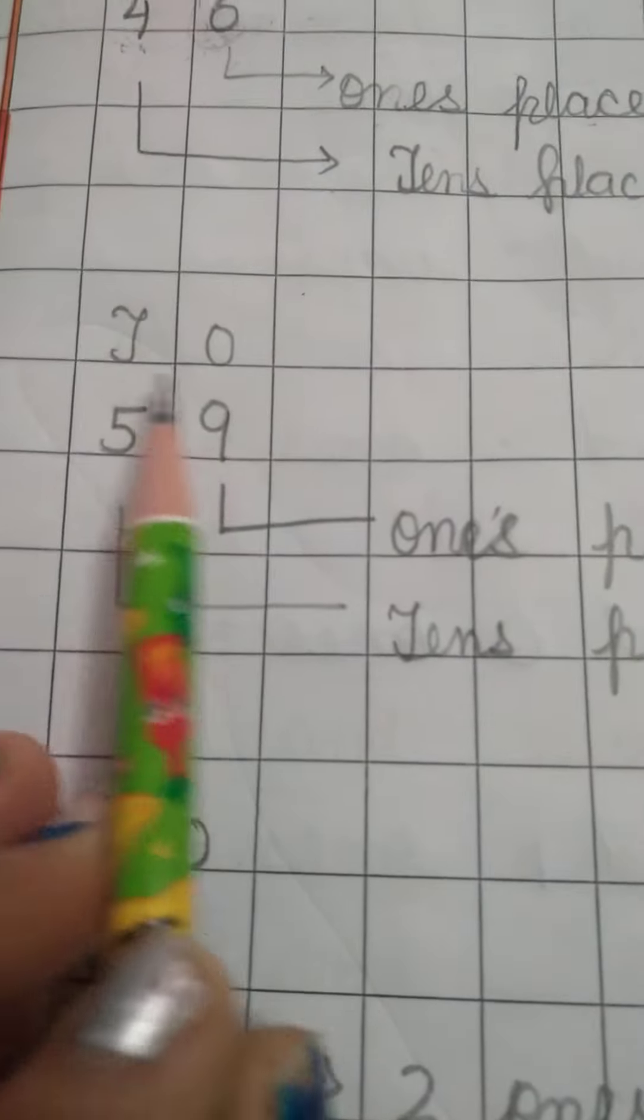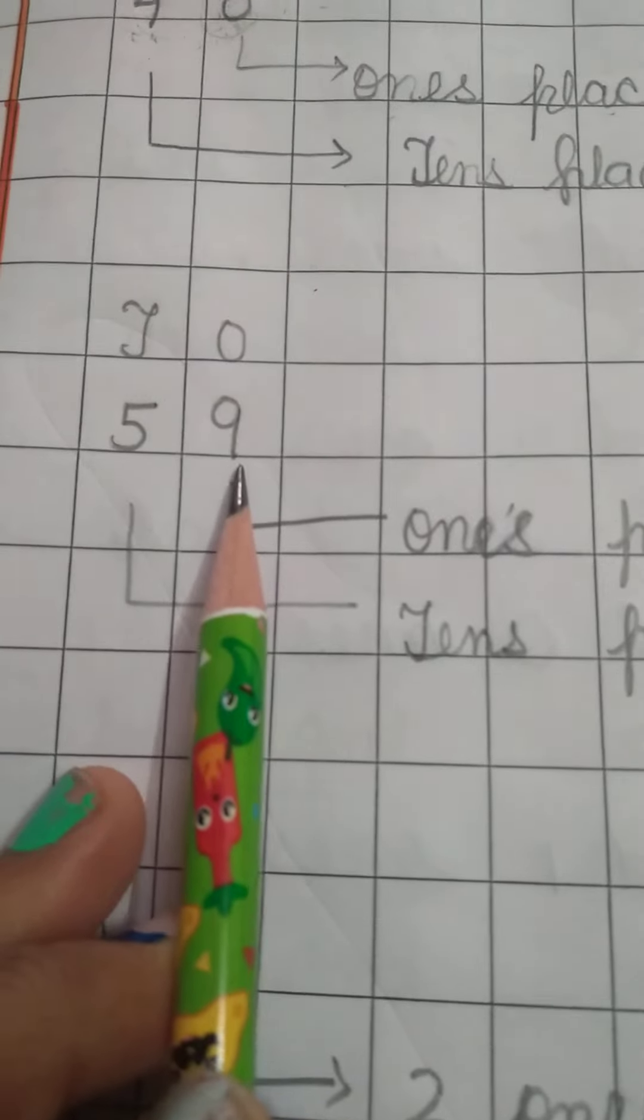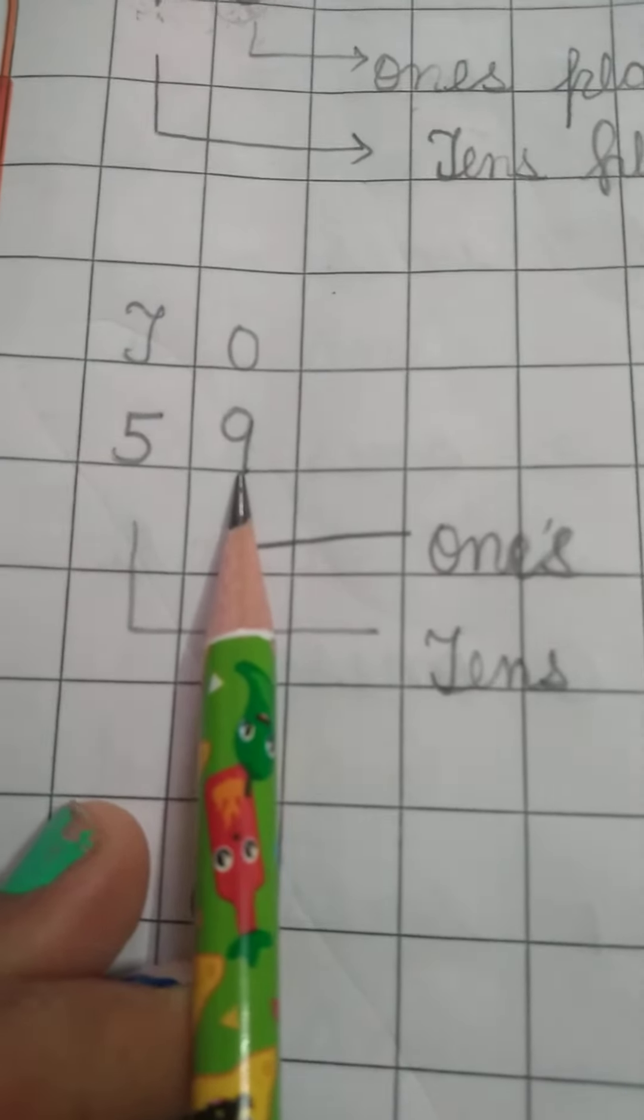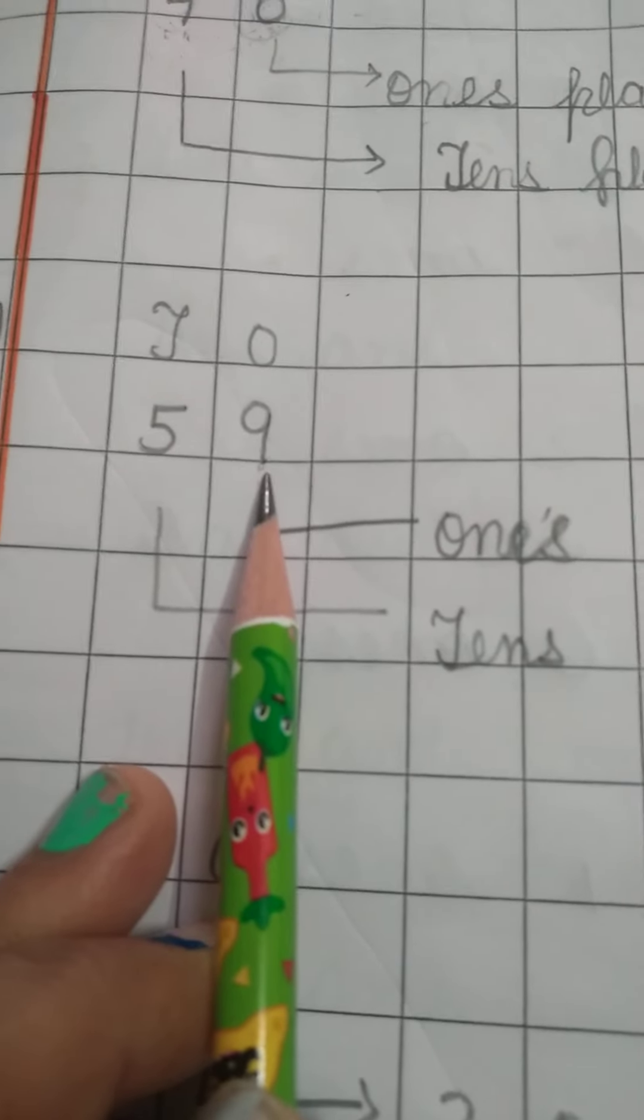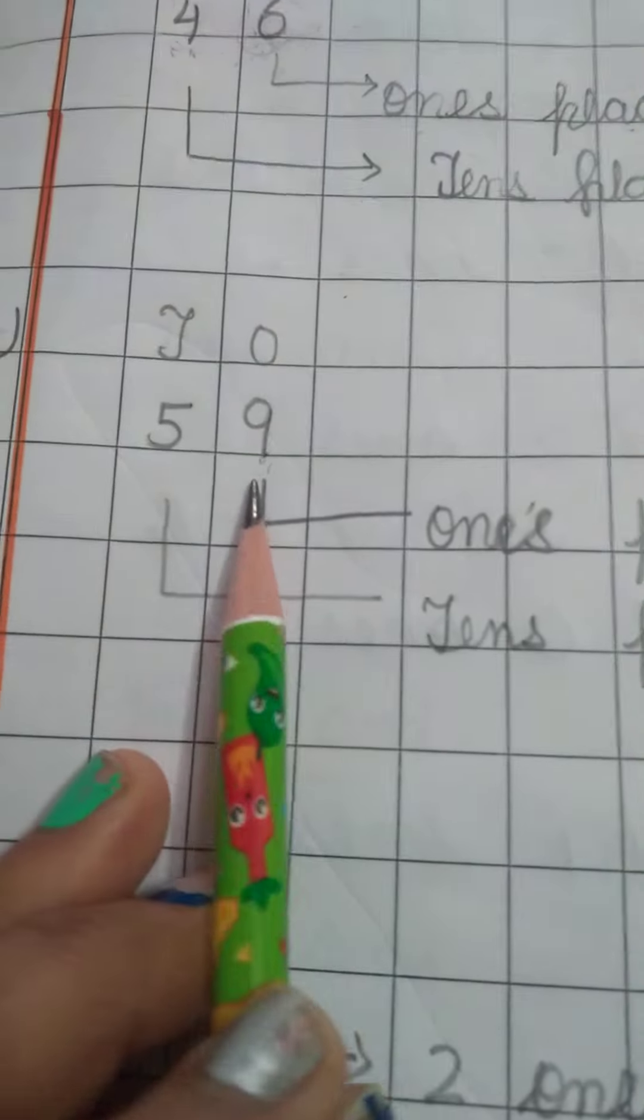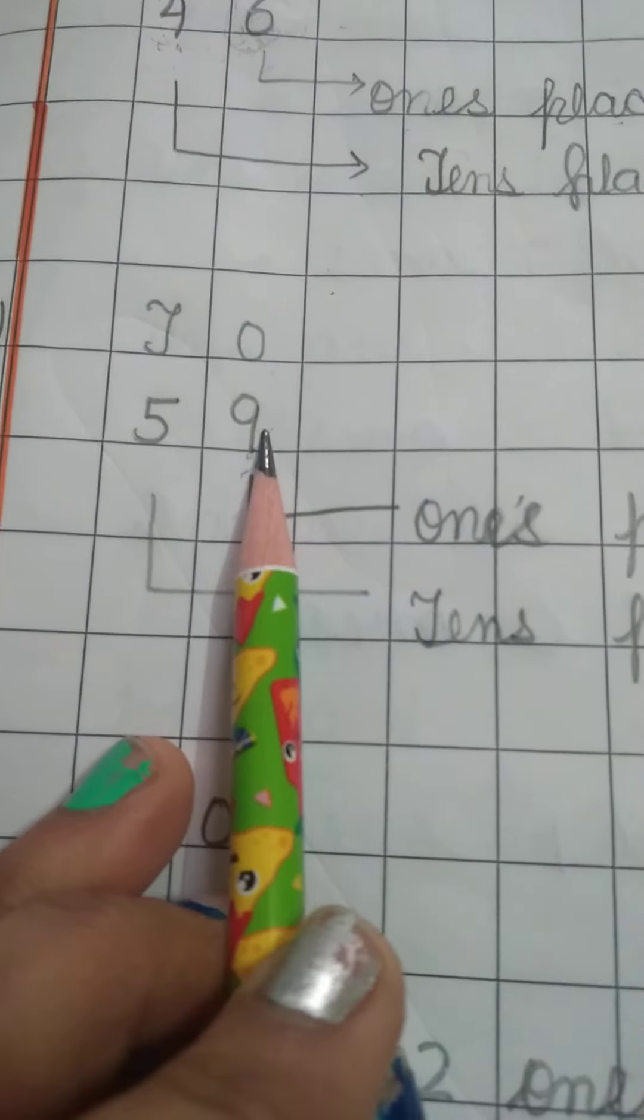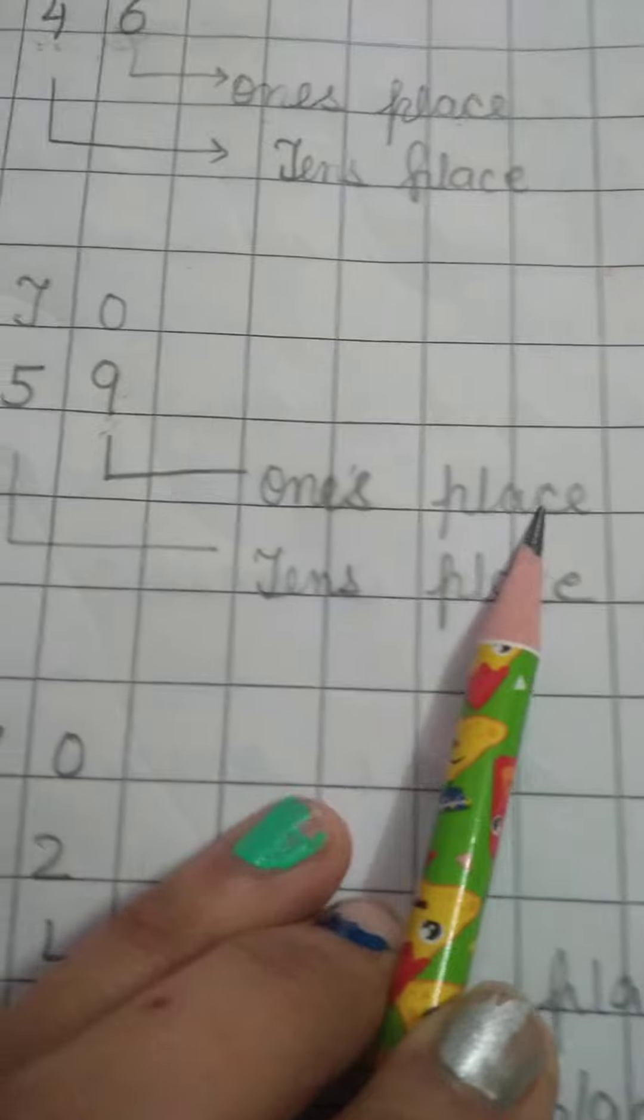I have the number 59. If I ask where is the number 9, on which place, you will say ones. Nine is in the ones place.